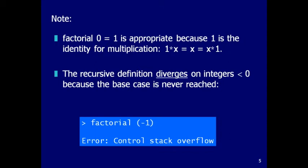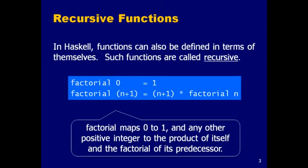Here's an interesting observation. If you define factorial using pattern matching, this function is partial. If you apply it to a negative number, it will just go on and on in an infinite recursion.